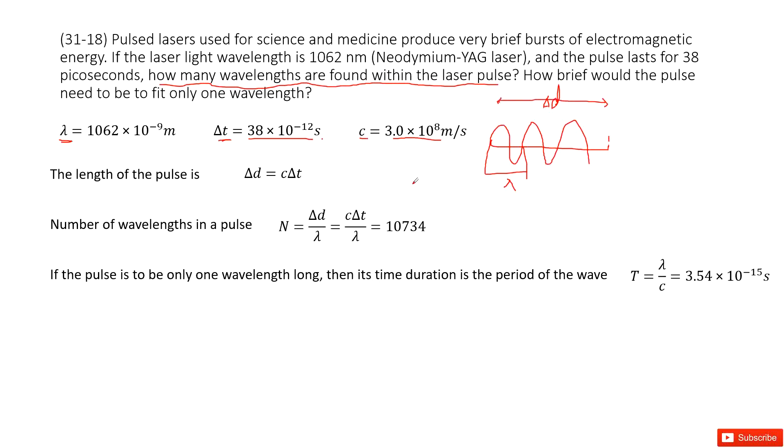So we can use delta d divided by lambda to get the number of wavelengths. This is how we solve it.